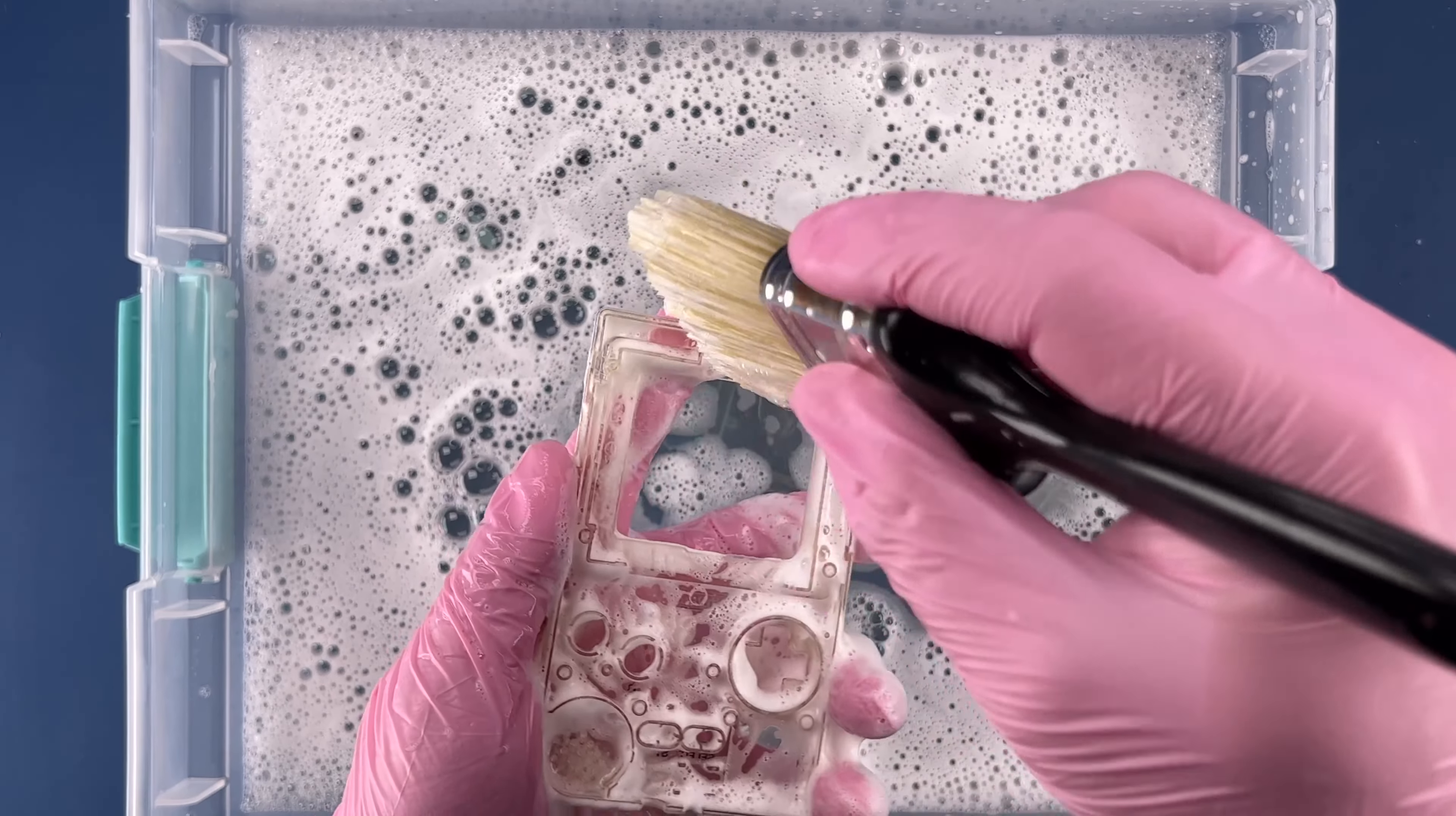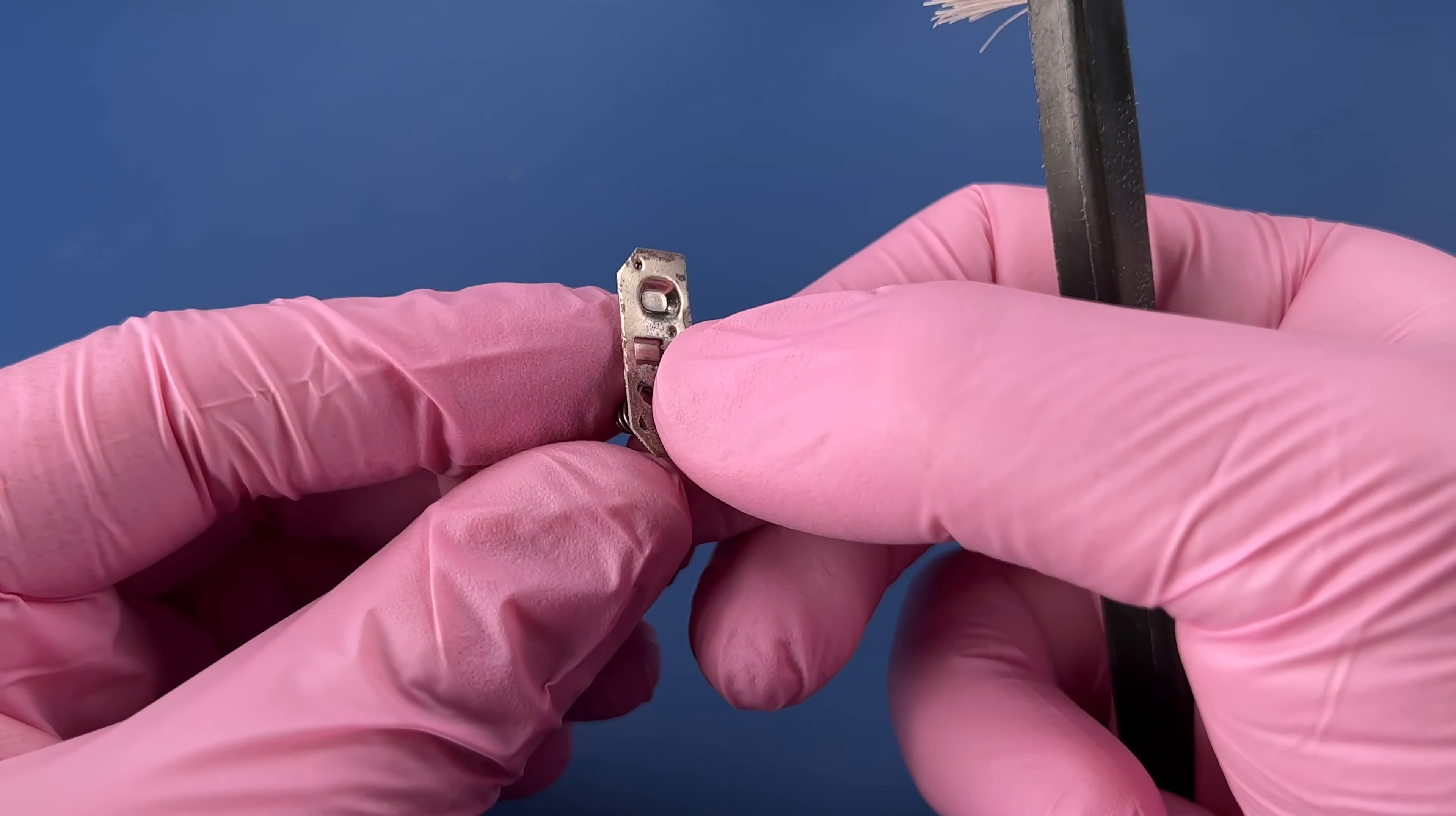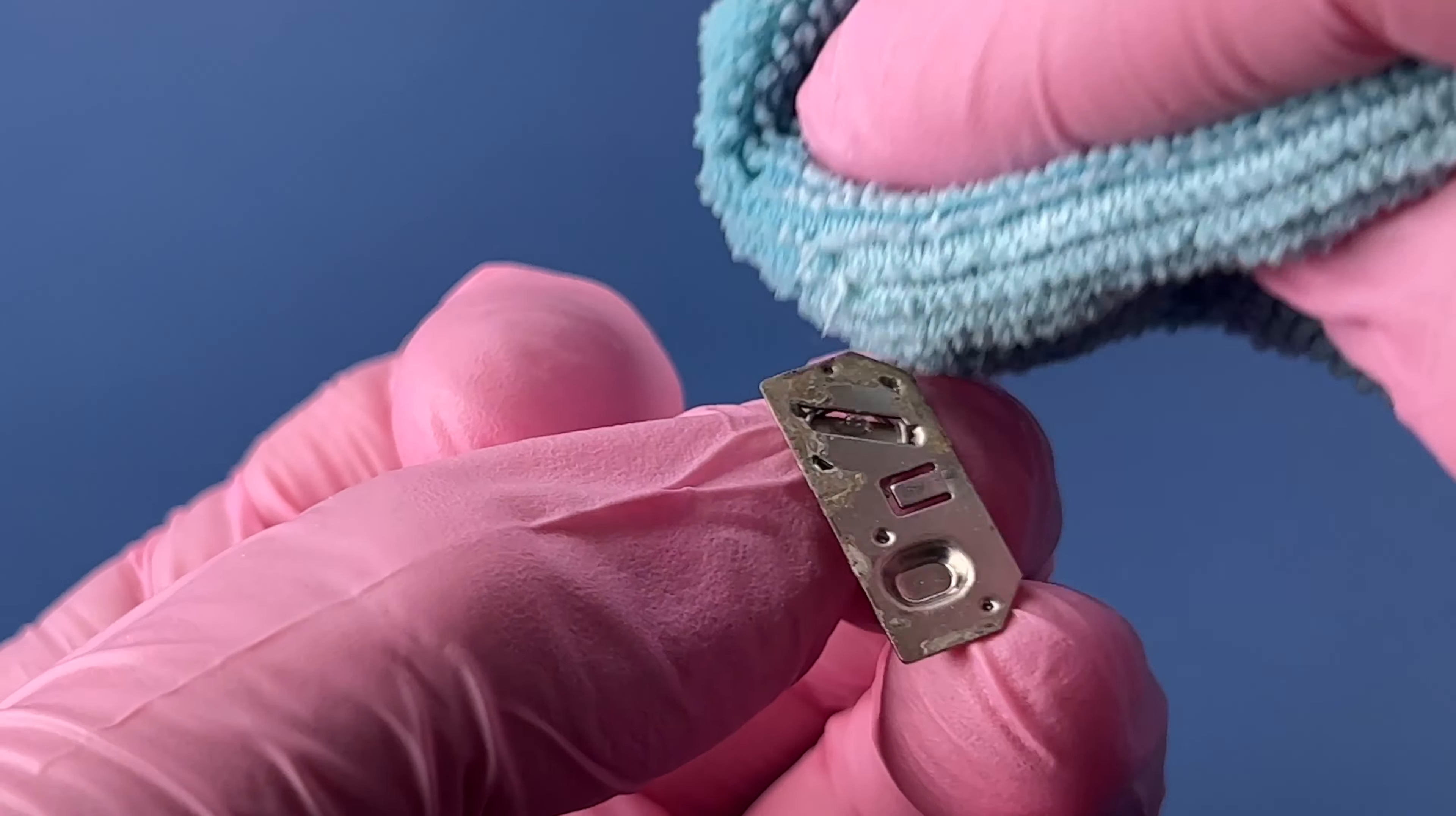Now some of this is dirt that I'm just going to be able to clean off of here. Some of it undoubtedly is going to be staining or maybe even some of the yellowing that can happen with these plastics. But I'll do the best I can just cleaning it here. Yep, that's a lot of soap. We'll go rinse that off.